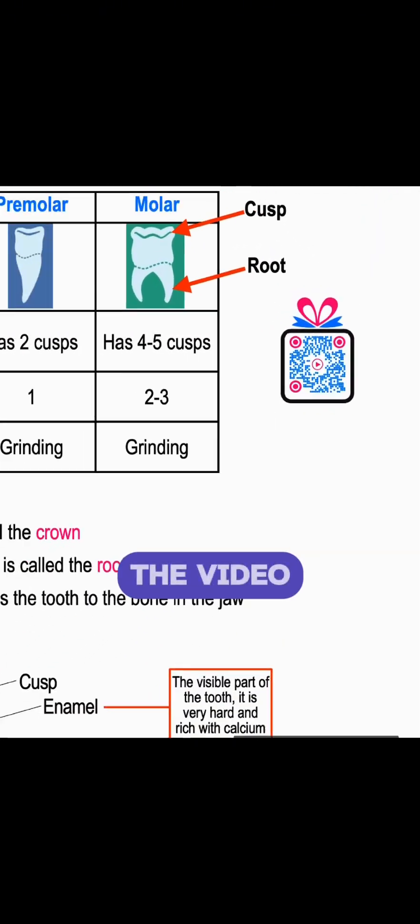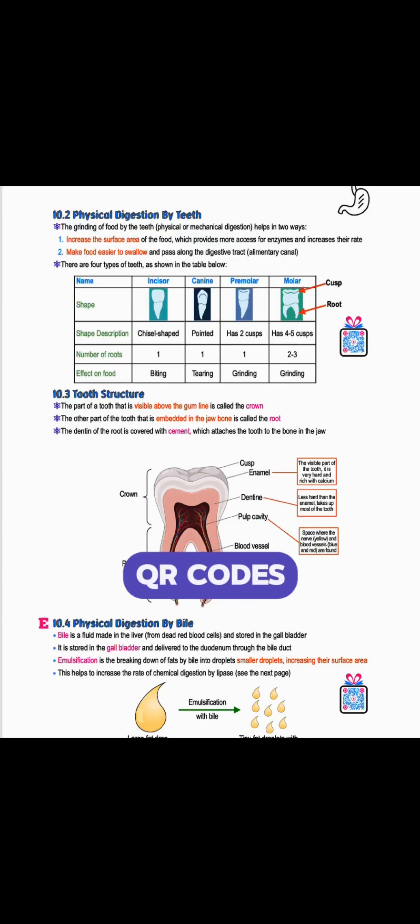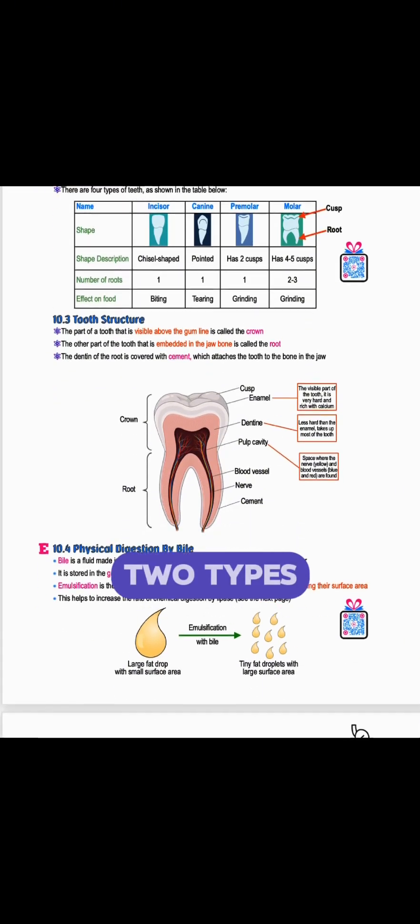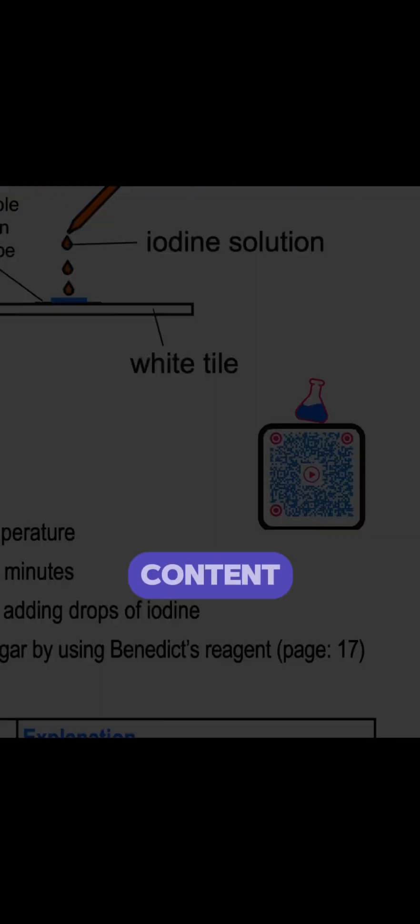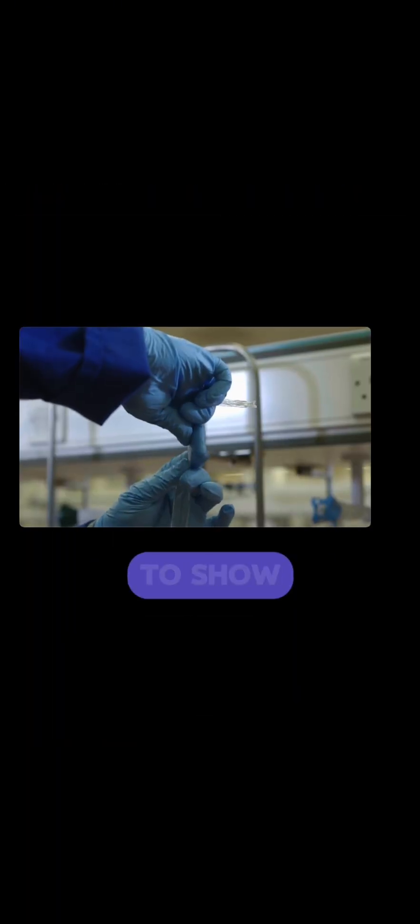Let's start with the video QR codes. There are two types: those that explain the content, and another to show you the experiments.